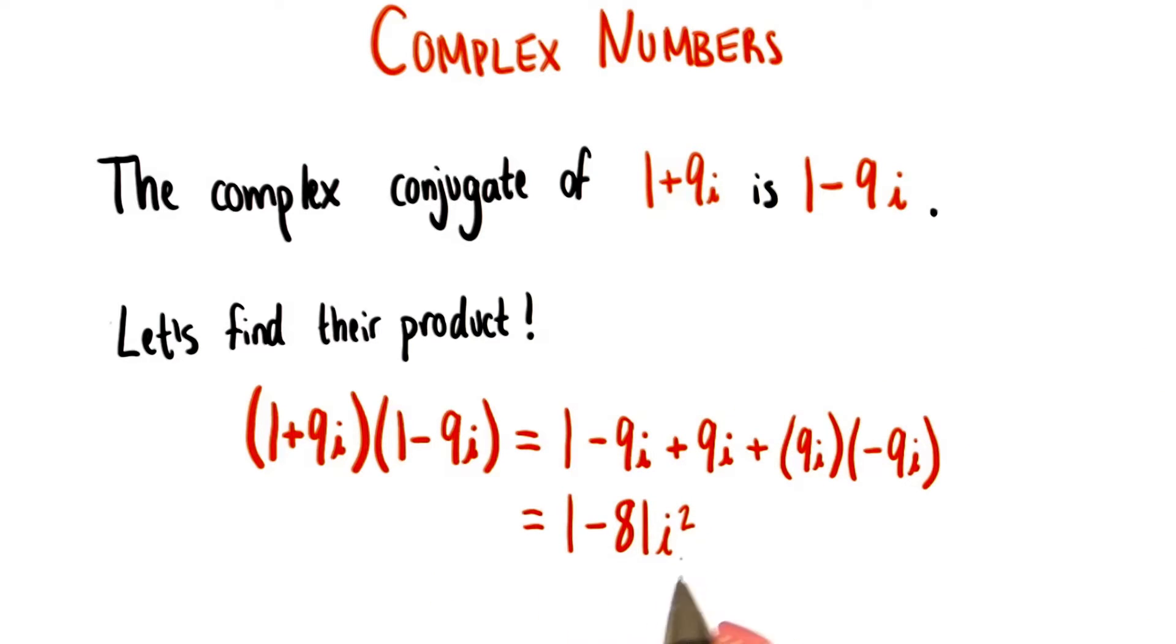I'd like to pause at this step for a second, where we have 1 minus 81i squared. And note that this is a difference of two squares.